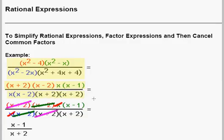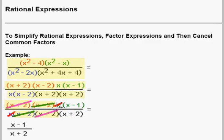Now we look for common factors. We see that there's a factor of x plus 2 in the numerator and the denominator — these cancel out. We see x minus 2 in the numerator and also x minus 2 in the denominator — these cancel out. There is an x in the numerator and also a factor of x in the denominator — these cancel out. All that we have left is x minus 1 over x plus 2, and that's our final answer.